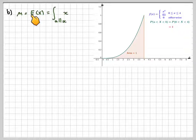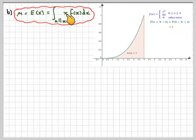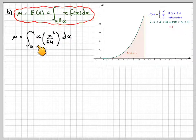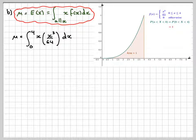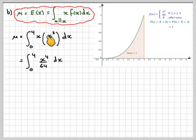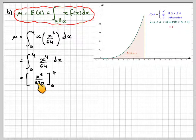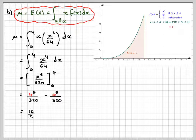The mean μ is E[x], which requires integrating x times f(x) over all x. So we compute the integral from 0 to 4 of x times x³/64 dx, which simplifies to x⁴/64. Integrating gives x⁵/320 between 0 and 4. Substituting the limits: 4⁵/320 minus 0, which gives 16/5, or 3.2.